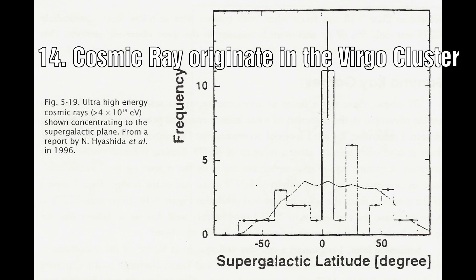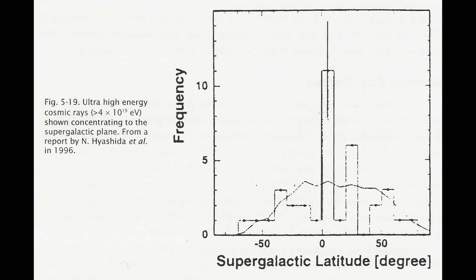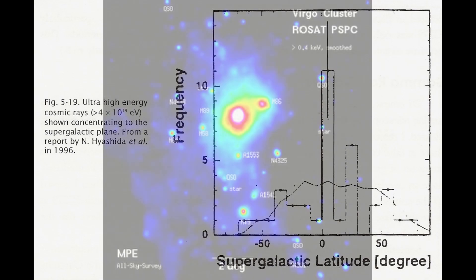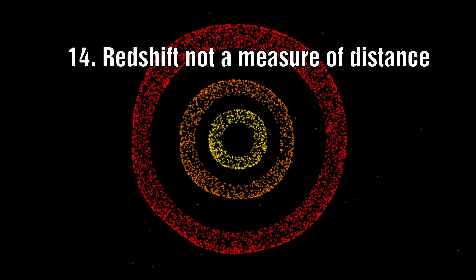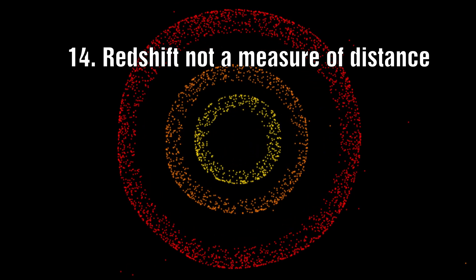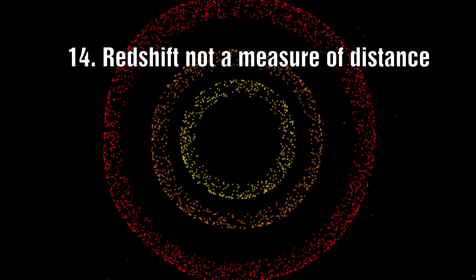Number 14: Cosmic ray emissions seem to all point to an origin from within the Virgo cluster, again relating back to the point that the Virgo cluster is an incredibly active area. Number 15: This quantization shows that redshift does not equate to distance, as otherwise we would sit at the centre of a series of walls of material that are expanding outwards at different speeds.